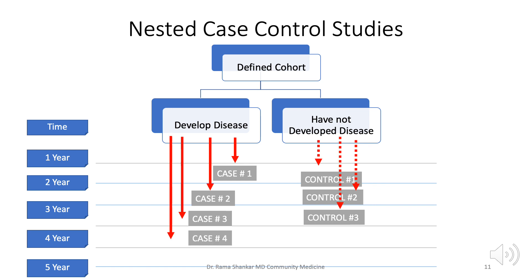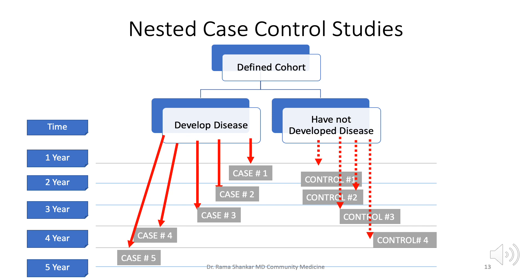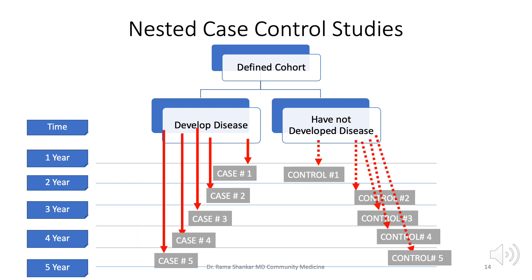After four years of follow-up, the fourth person develops the disease — marked as Case 4 — and Control 4 is selected similarly. After five years, Case 5 develops and Control 5 is selected from those who have not developed the disease. In this way, cases and controls are in effect matched on calendar time and length of follow-up.